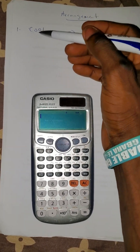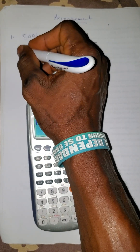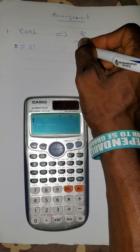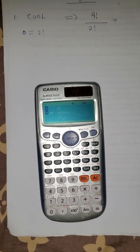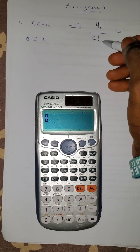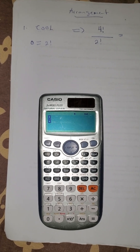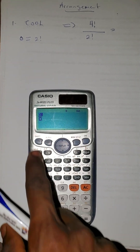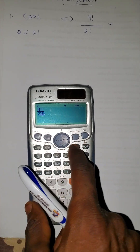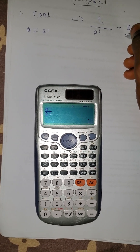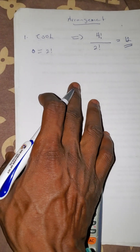...each letter that appears. You observe that O appears twice, so that's two factorial. Letters that appear once, you do not include them. So we now have it to be four factorial over two factorial, which gives the answer 12. So there are only 12 ways this word COOL can be arranged.